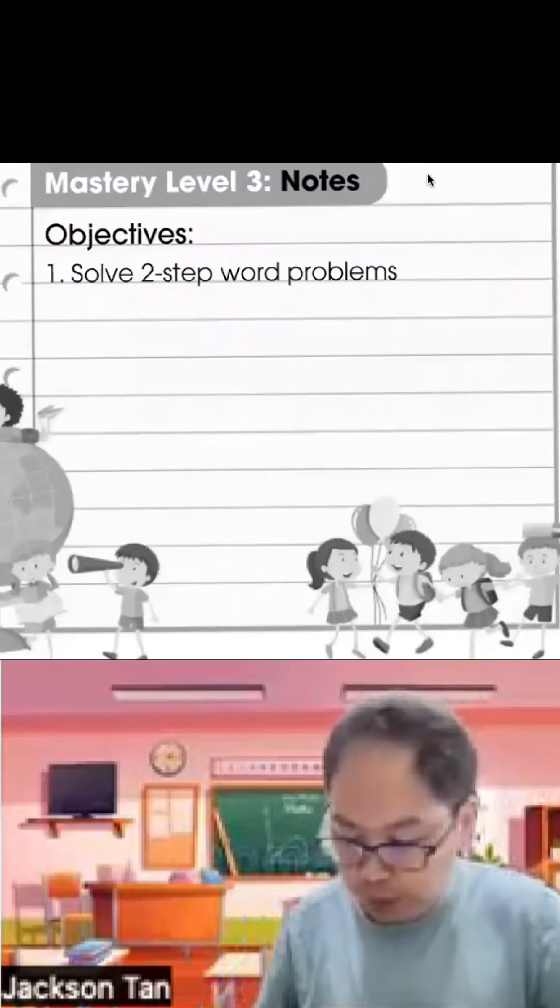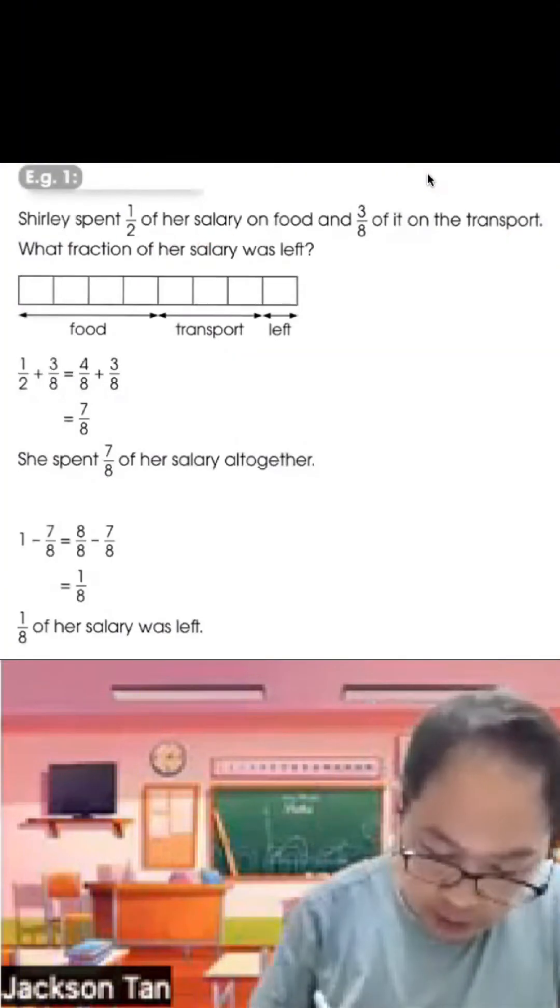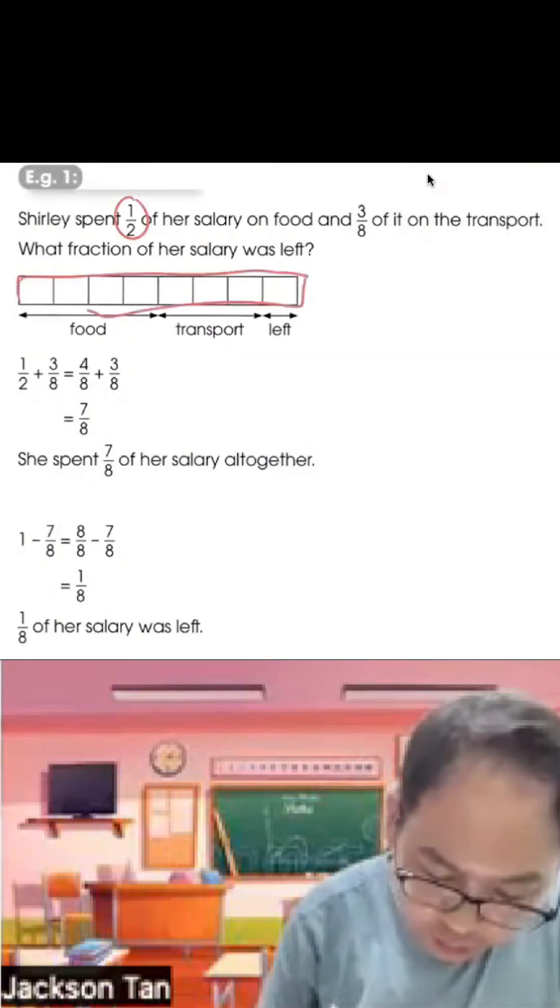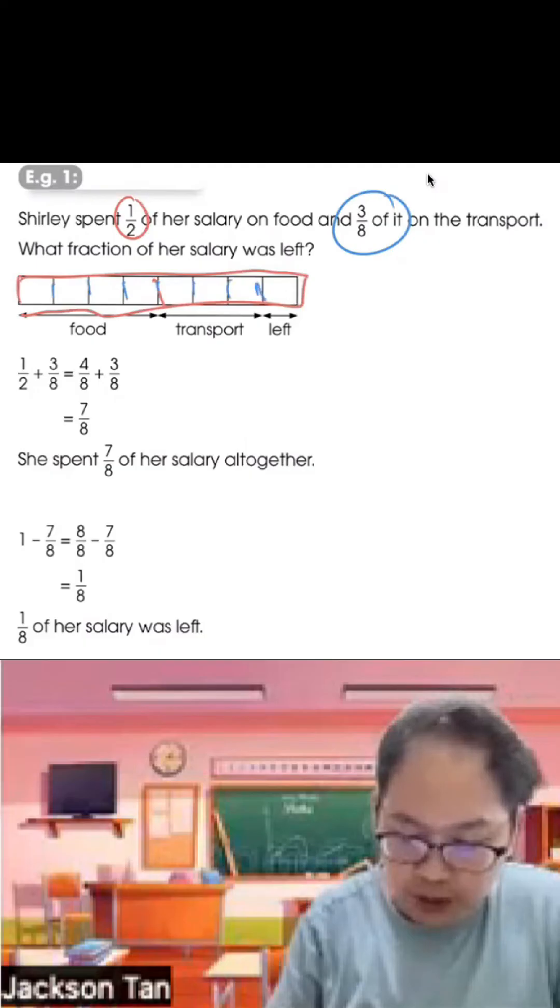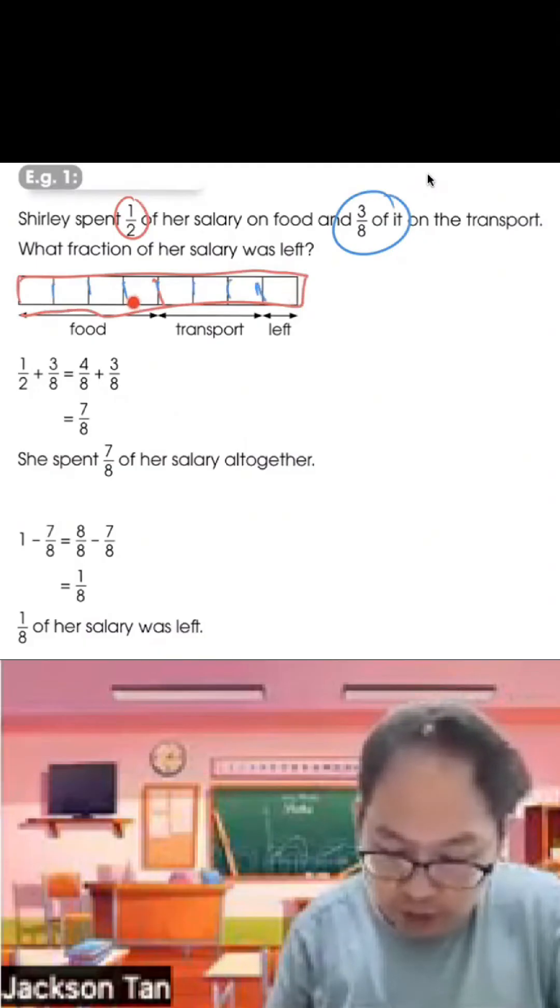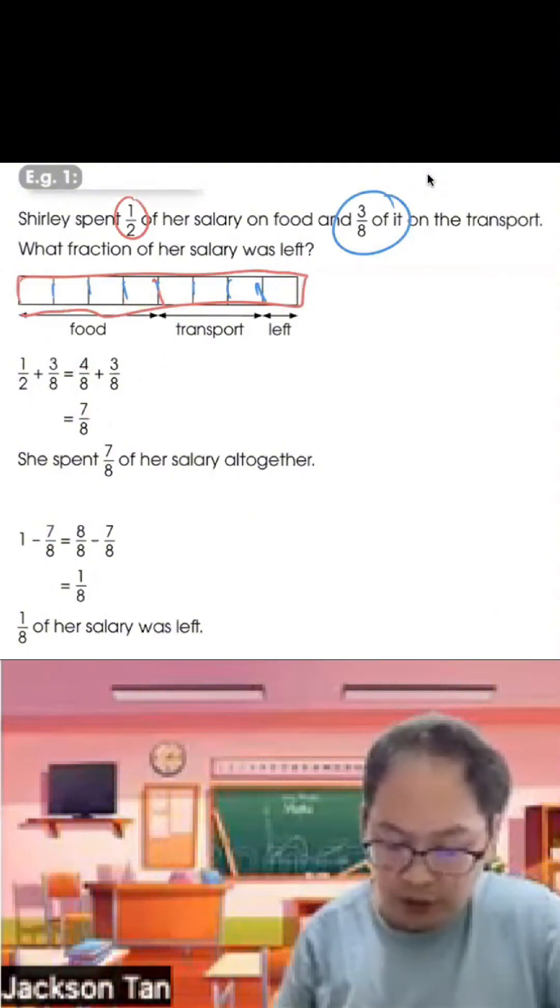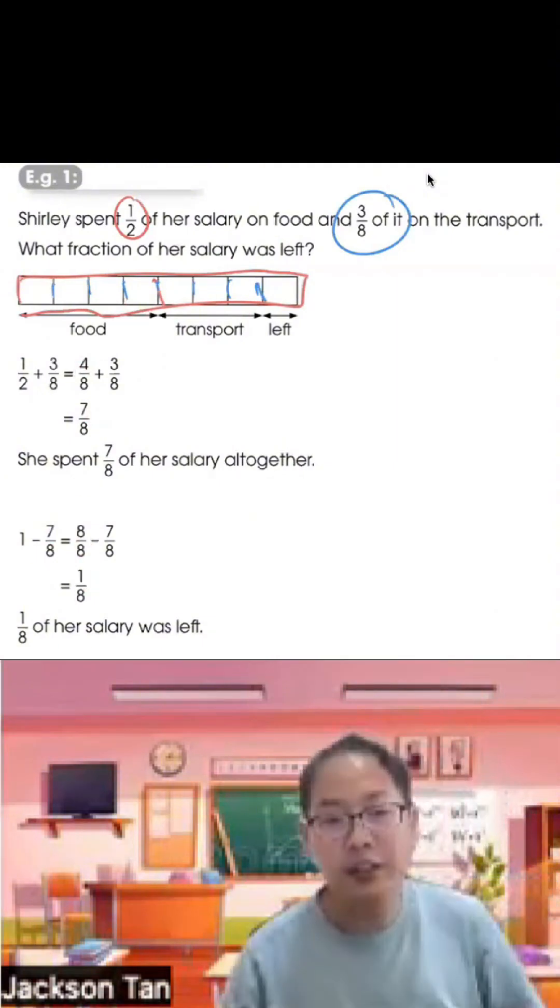Now mastery level 3: solve two-step word problems. She spent half of her money on food. So half, model here, I cut into 2 parts. And 3/8 on transport. So I cut this further into 8 parts. What fraction of the money was left? So if you draw clearly, you can see that half is 4 out of 8 plus 3 out of 8. That gives you 7 out of 8. She spent 1 whole minus 7 out of 8 gives us 1 out of 8. So 1 out of 8 of the salary was left.